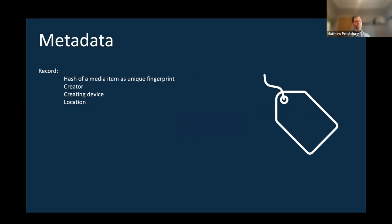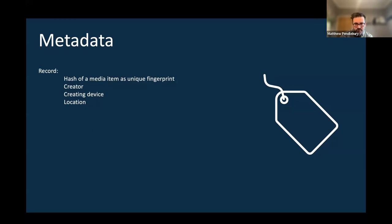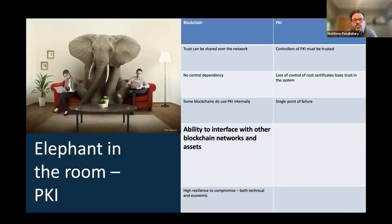If we record certain amounts of metadata about a piece of media — where it was taken, what created it, what kind of device, sensor, camera, or phone, potentially the identity of the creator or owner of the creating device — and we take a hash of the media at that point and store all of that metadata in a safe place, we then have a record of when something was created, if we can trust it.